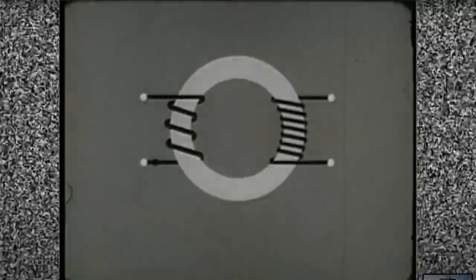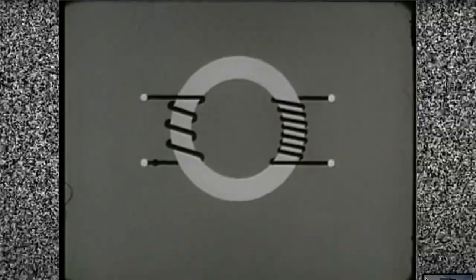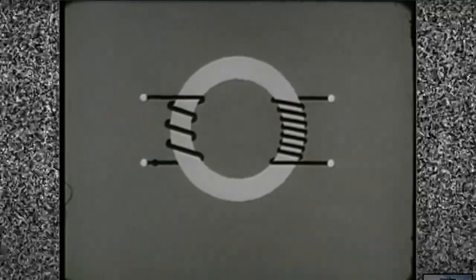Now, how do we get information out of a core? By means of a second winding. Let's follow the transfer of information from input to output.